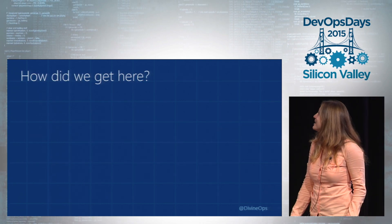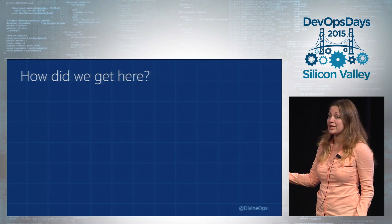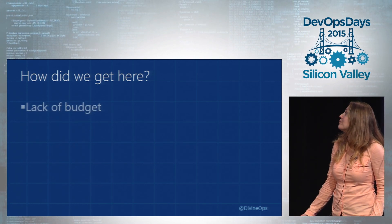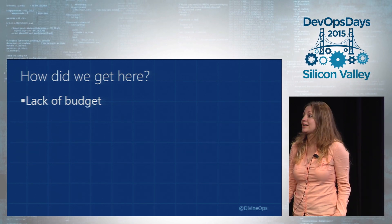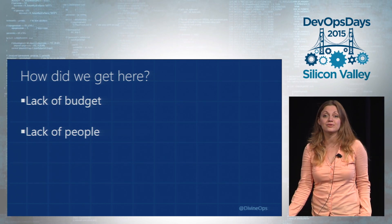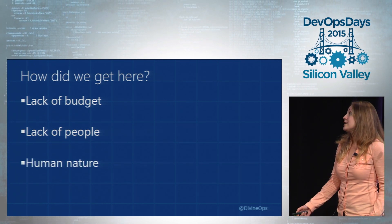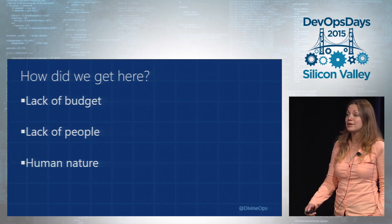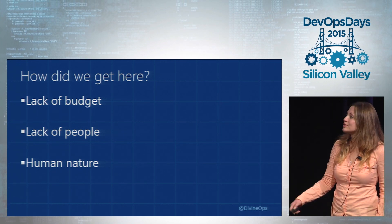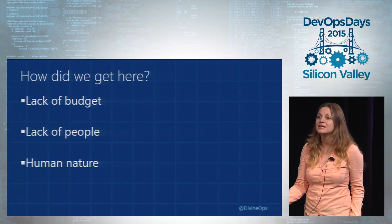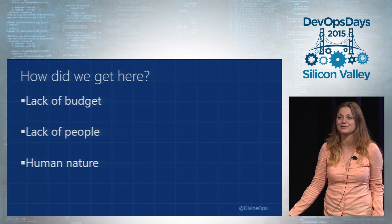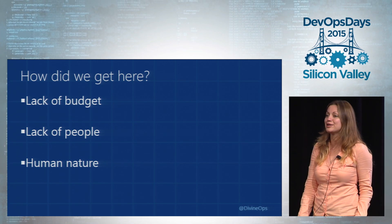How did we get here? There are multiple reasons. There could be lack of budget — I just can't afford to hire more people. It could be lack of qualified people. Or, I think in most cases, it's just human nature. People like to know their system, they like to be in control of it, and they naturally roll into being that expert person. I'm actually surprised that not many people raised their hands when asked if they've ever been a single point of failure, because I can promise you many of you have been.